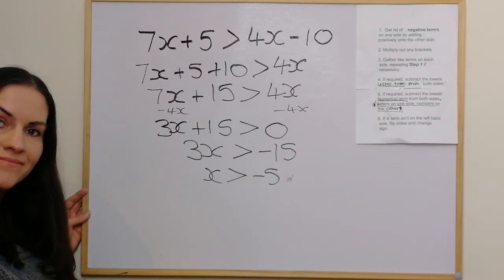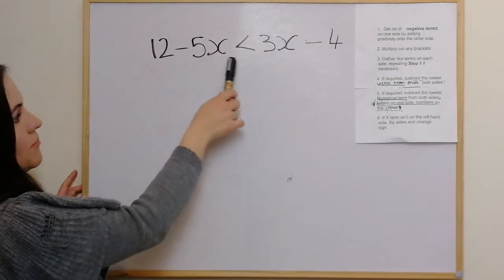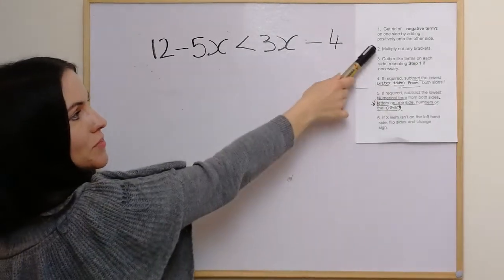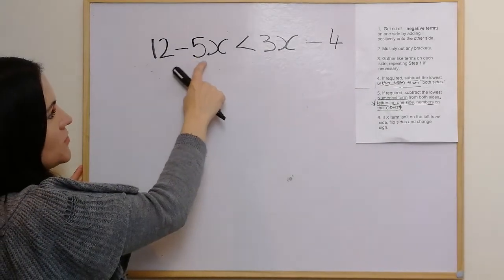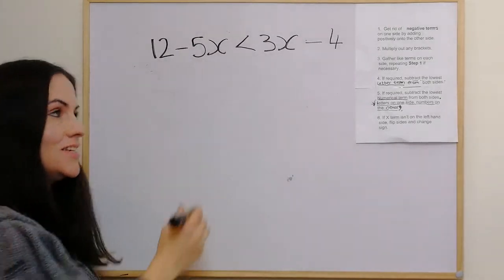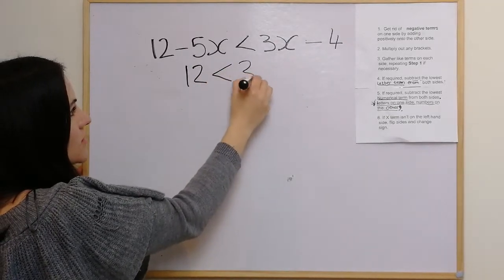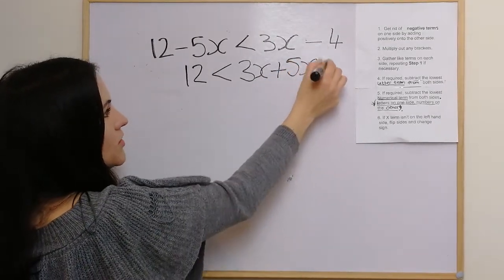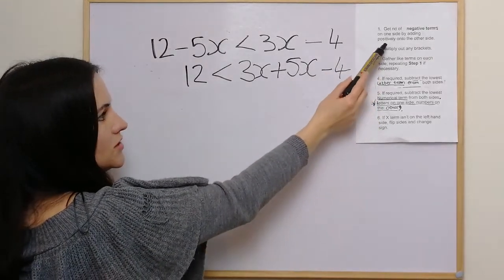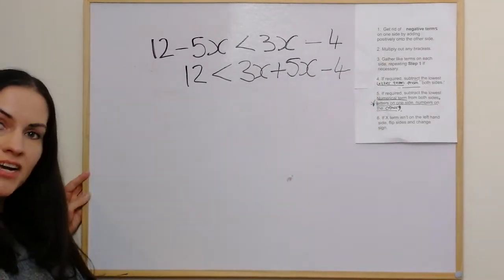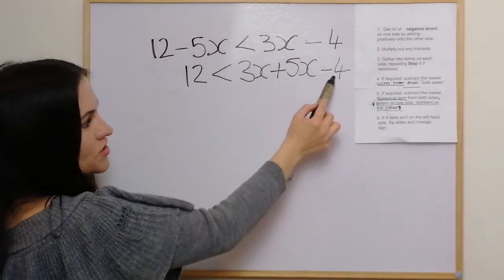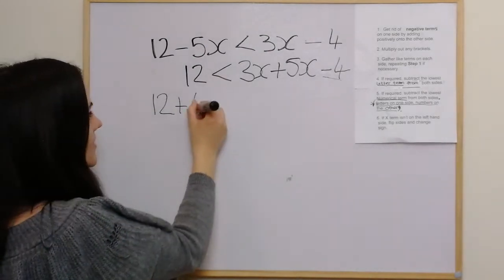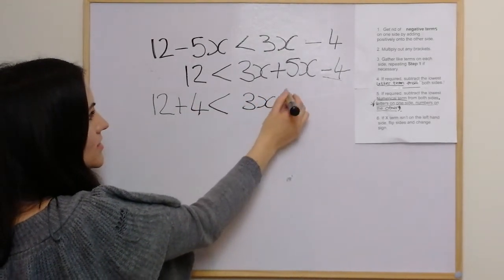In our second example, we follow the six steps again. Step one: get rid of negative terms on one side by adding them positively on to the other side. We have the negative 5x, so we add it on to the other side, giving us 12 is less than 3x plus 5x. We have another negative term, so we keep going — we get rid of it by adding it positively on to this side. So we have 12 plus 4 is less than 3x plus 5x.